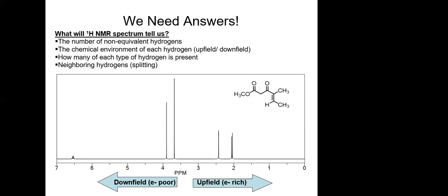We know what each hydrogen is connected to by the number of lines that signal is split into. And we know the environment based on where the protons are on the molecule, because every type of proton is in a specific chemical environment. There's a chart with all the different chemical shifts that will be shown.